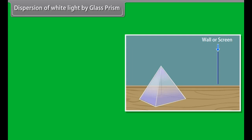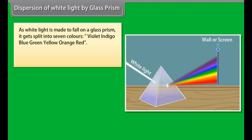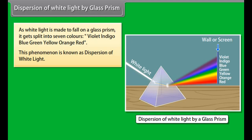Now we shall discuss what will happen if we incident white light on the glass prism. As white light is made to fall on a glass prism, it gets split into seven colors: Violet, indigo, blue, green, yellow, orange, red. This phenomenon is known as dispersion of white light.